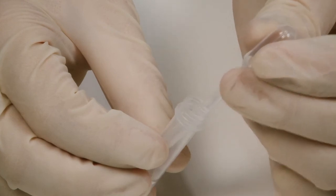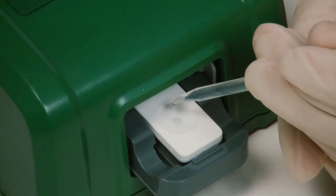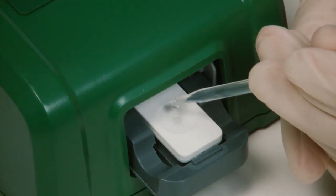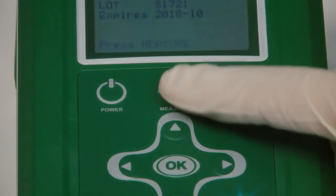Add 3 drops of the diluted sample to the sample well marked S on the test device and then immediately press measure on the Magnea Reader.